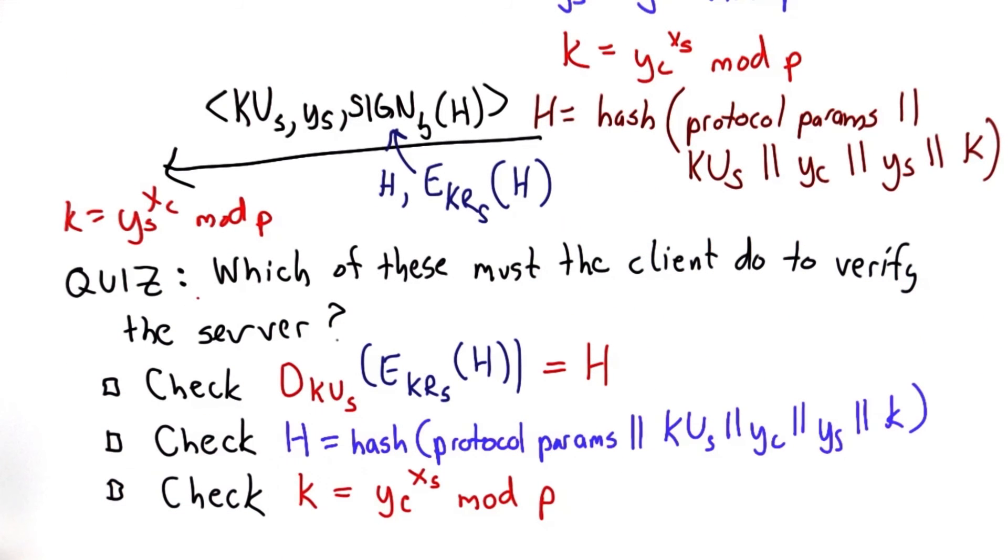So for this quiz, I want to see that you understand the SSH protocol. At this stage, the client and the server have a shared key. The question is, what should the client do to verify that the server is indeed the server that the client expects it is talking with? Check all of the choices that are necessary to verify this.